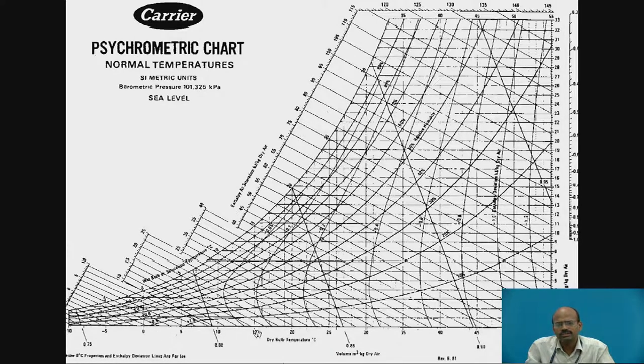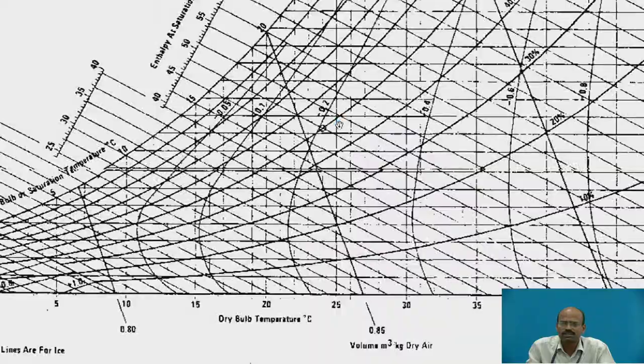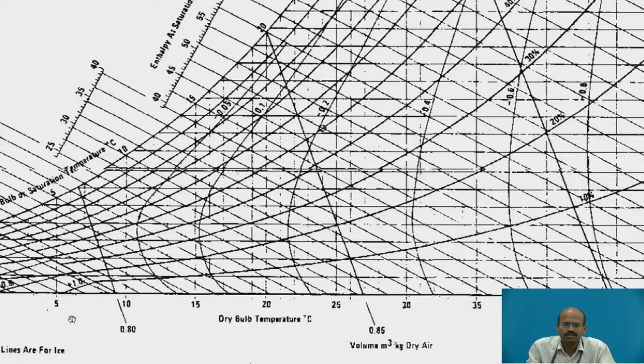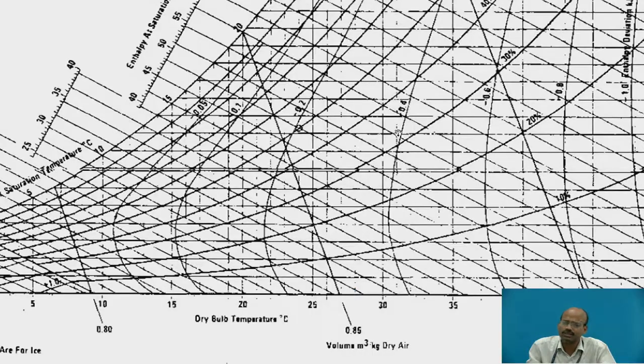Here along the x-axis, dry bulb temperature scale is taken. The temperature for this carrier chart starts from minus 10 degrees Celsius to plus 55 degrees Celsius. For DBT lines, I have to take vertical projection, parallel lines to the y-axis. These lines will be constant DBT lines. For example, this is 25 degrees Celsius line, this is 20 degrees Celsius line, this is 30 degrees Celsius line. We can measure the DBT temperature by using simple thermometer of moist air and those temperatures we can locate along these DBT lines.